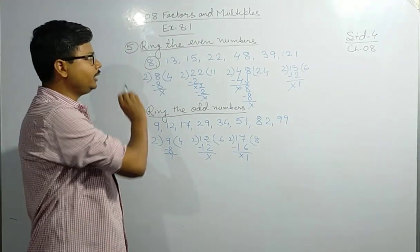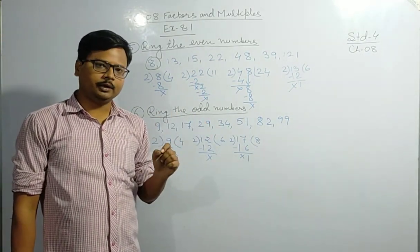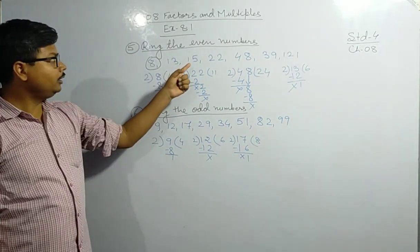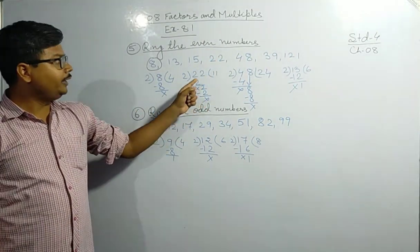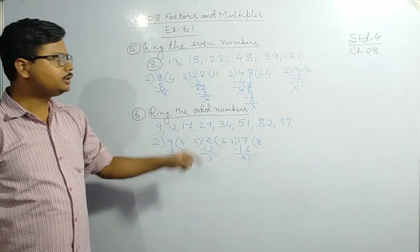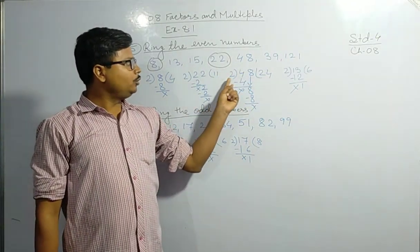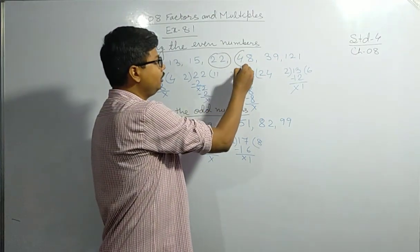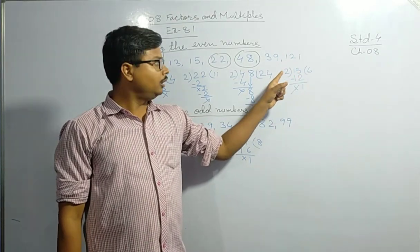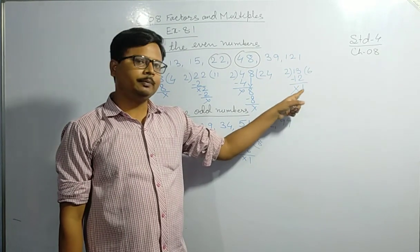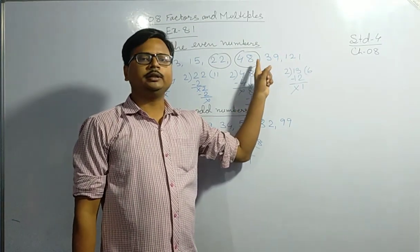Next is fifteen — if you divide fifteen by two you get a remainder, so fifteen is not an even number. Twenty-two divided by two gives remainder zero, so twenty-two is an even number. Forty-eight divided by two also gives remainder zero, so forty-eight is an even number. Thirteen divided by two gives remainder one, so thirteen is not an even number. Thirty-nine and twenty-one you have to check on your own.